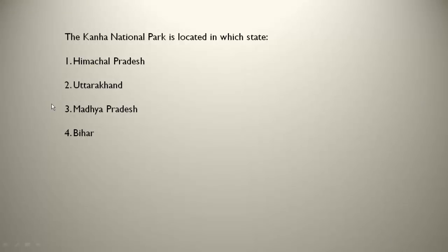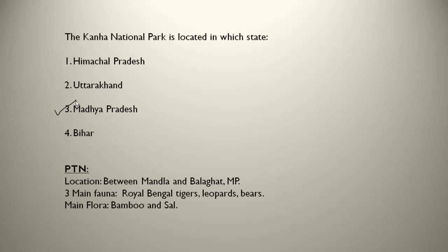The Kanha National Park is located in which state? Kanha National Park is in Madhya Pradesh, located between Mandla and Balaghat districts. The main fauna are Royal Bengal tigers, leopards, and bears — tigers are present here too, making it important. The main flora are bamboo and sal trees.